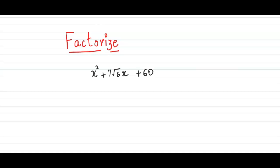So let's start and think how we should split the middle term in order to get the factors of this expression. So let's see, we have that the product should be 60 and the sum should be 7 under root 6. You can split 60,